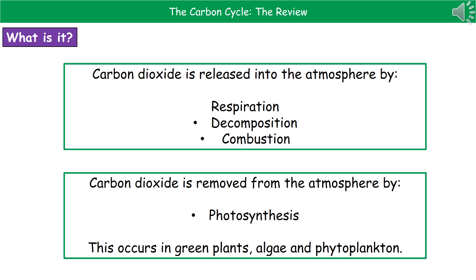To summarise into easy-to-remember chunks: carbon dioxide is released into the atmosphere by three processes. The first one is respiration, which is carried out by all living organisms — that transfers energy from the chemical stores in food, making carbon dioxide that goes back into the atmosphere. Secondly, decomposition: when anything dies, the decomposers — the bacteria and the fungi — break down their remains and release carbon dioxide as they respire to do this.